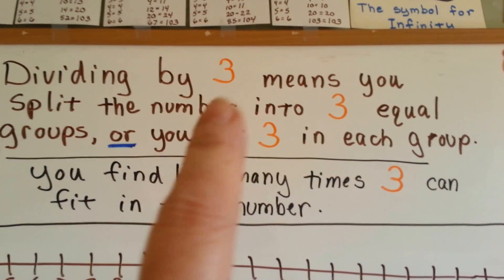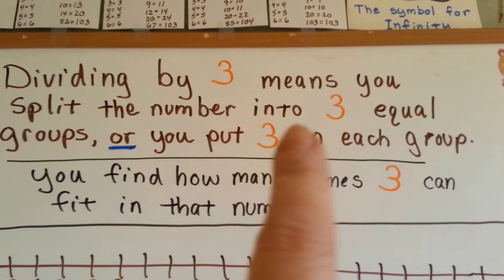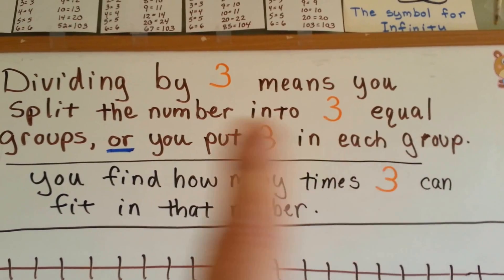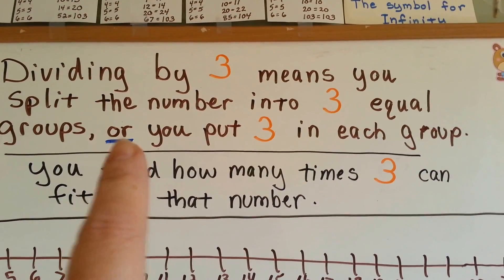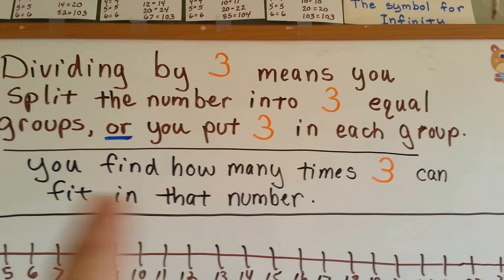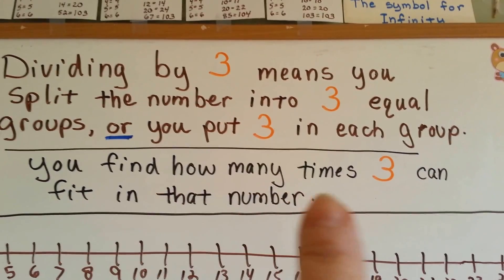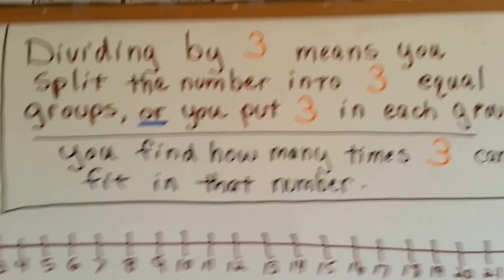Dividing by 3 means you split the number into 3 equal groups, or you put 3 in each group. You can find how many times 3 can fit into that number.